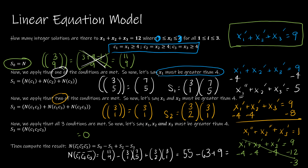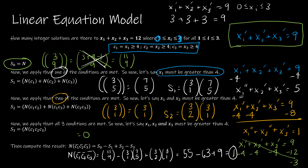The answer is 1. Going back to the transformed equation x1' + x2' + x3' = 9 where each xi' is between 0 and 3, the only way to achieve this is 3 + 3 + 3. That is the only valid solution.